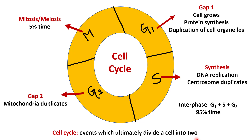Now Cell Cycle has four phases: G1, S, G2, and M. G1 is also called Gap 1 phase. S is also called Synthesis phase. G2 is also called Gap 2 phase. Now we can call them together interphase. So interphase is G1 plus S plus G2.